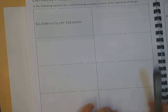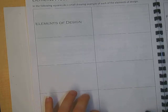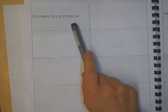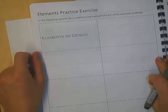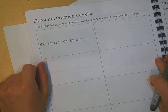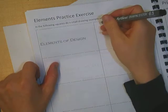is give an example of each element of design and each principle of design. But we're just going to focus on the elements of design in this. And if you don't have your book for whatever reason, you can take a piece of paper and fold it into eight squares. And in one of the squares, you're going to write elements of design. And then all the others, you'll put whatever element that there is.